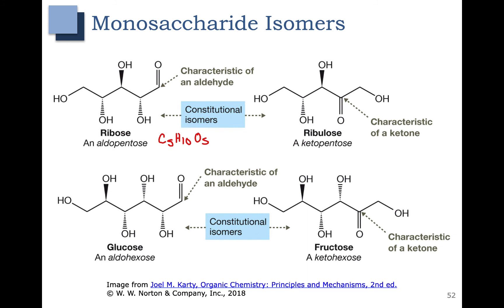Glucose and fructose on the bottom are also constitutional isomers, and we can tell that by their classification. Glucose is an aldohexose — it has 6 carbons and an aldehyde. Fructose is also a hexose with 6 carbons, but fructose is a ketohexose, meaning that it has a ketone. Glucose and fructose have the same molecular formula; however, because their connectivity is different, they are considered to be constitutional isomers.